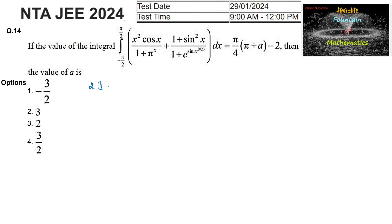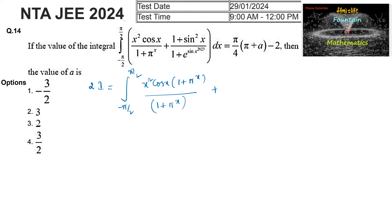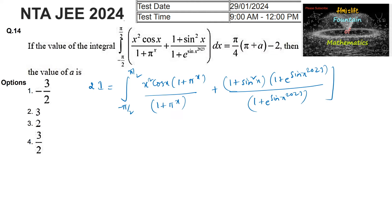Adding equations (1) and (2), we get 2I = ∫_{−π/2}^{+π/2} of [x² cos x · (1 + πˣ)/(1 + πˣ)] + [(1 + sin²x) · (1 + e^(sinx)^2023)/(1 + e^(sinx)^2023)] dx. The fractions cancel to 1, so 2I = ∫_{−π/2}^{+π/2} [x² cos x + 1 + sin²x] dx.